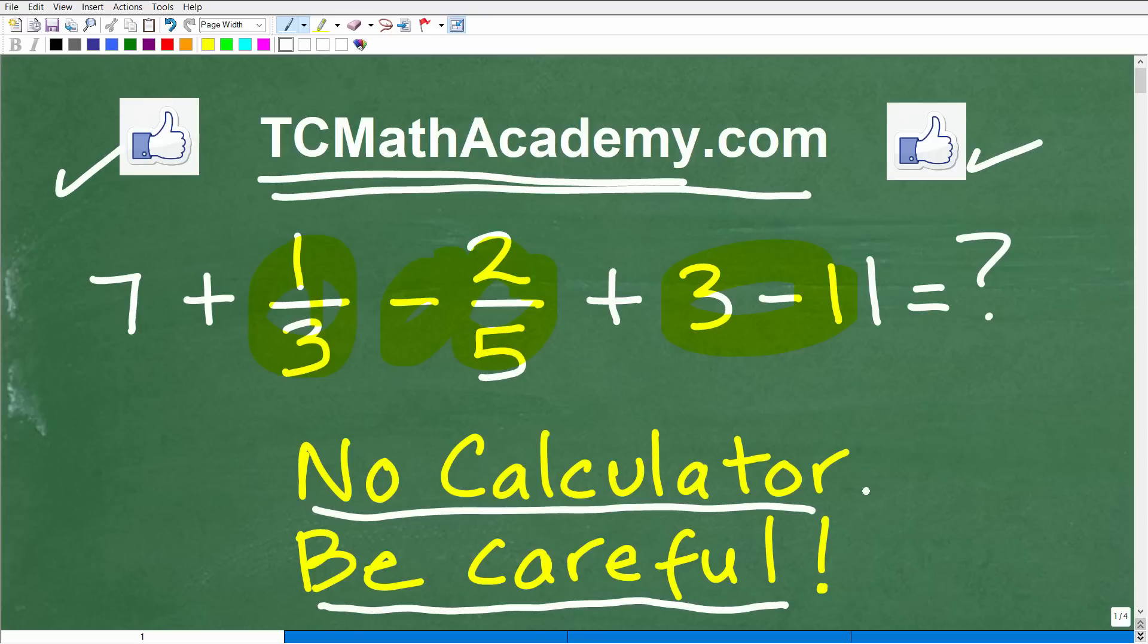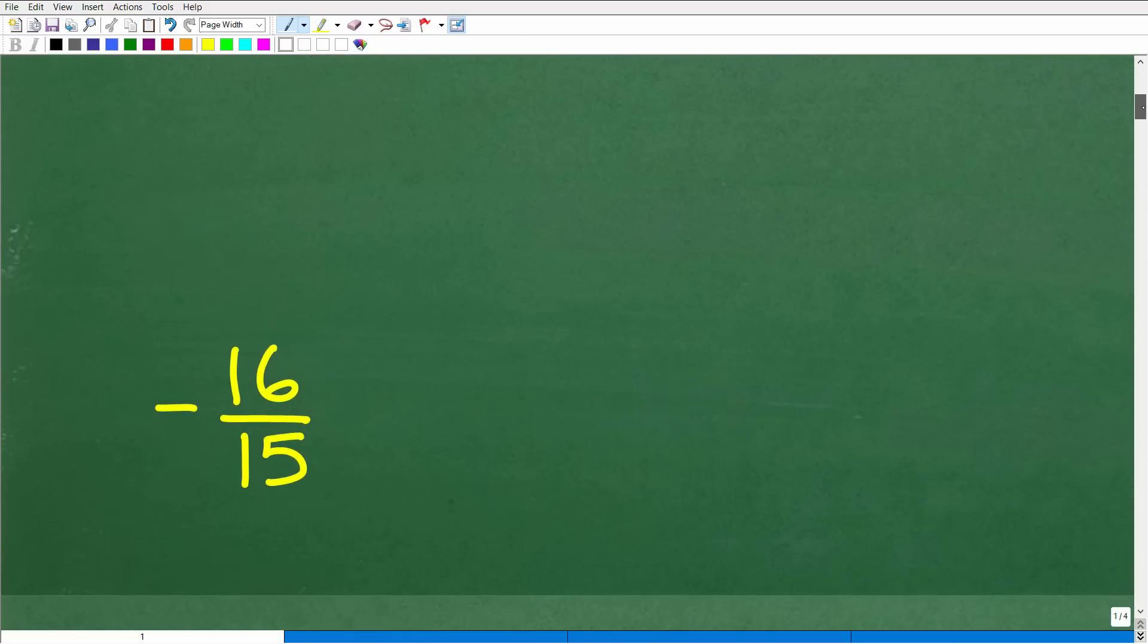Okay, so again, we don't want to use our calculator, so put that away, and let's go ahead and take a look at the answer. Okay, so negative 16 over 15, and if you got a mixed number equivalent for this as the final answer, well, then you did this problem correct. So that's very, very good.